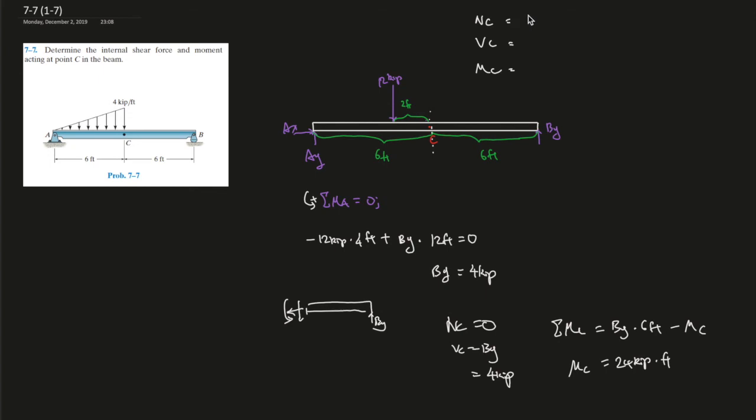And here we have all. Vc is 4 kip, NC is 0 kip, and Mc equals 24 kip times foot. And fun fact, kip is the currency of Laos.